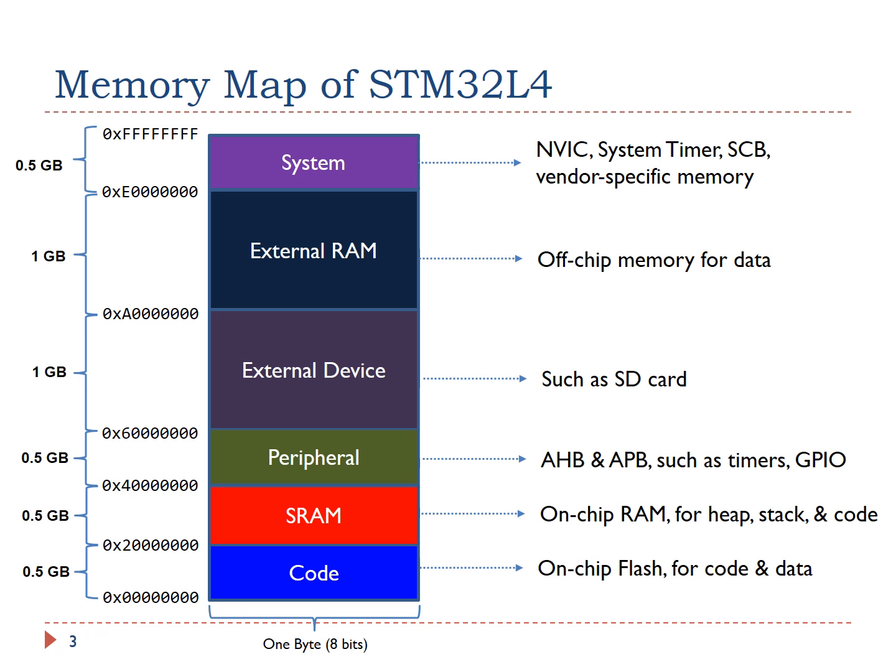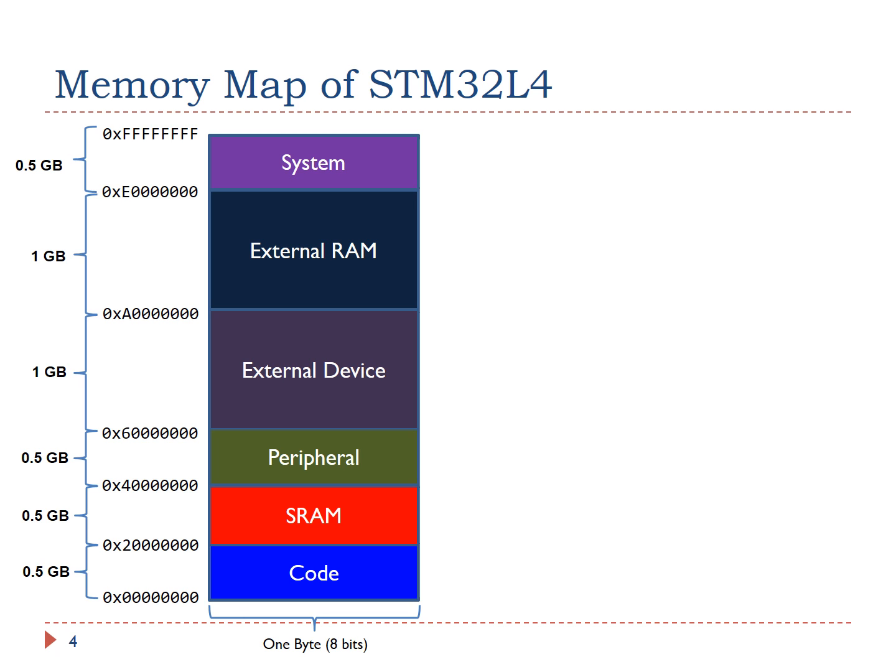Let's take a look at the peripheral region. This region covers the memory addresses of all on-chip peripherals such as GPIO, timers, USART, SPI, and ADC. Specific mapping addresses are dependent on vendors and chips. We will use GPIO on STM32L4 as an example to illustrate the concept of memory mapped I/O.